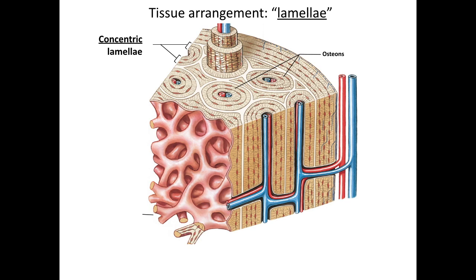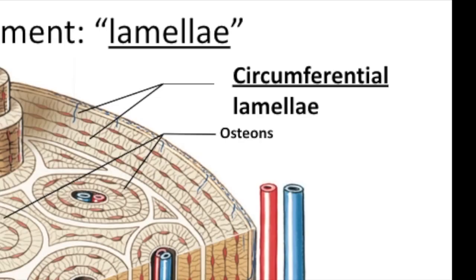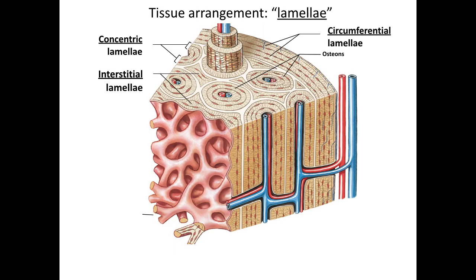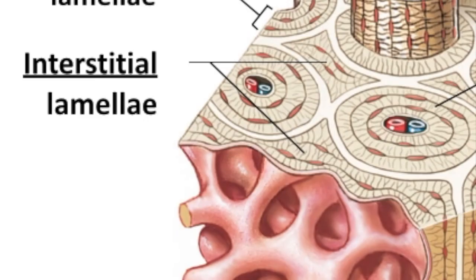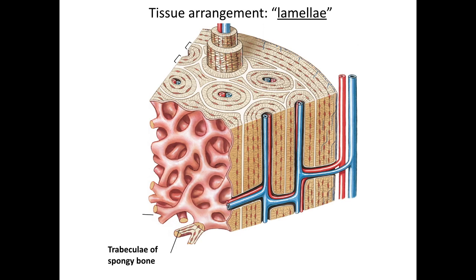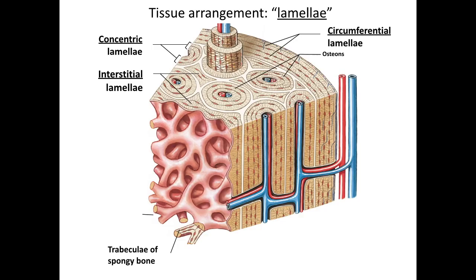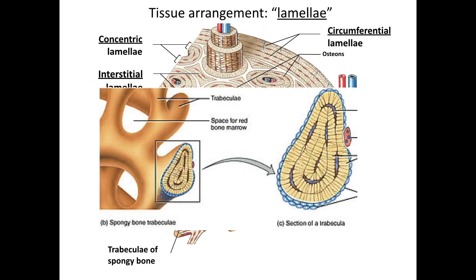Around the entire bone is a layer called the circumferential lamella. In between the concentric lamellae are smaller pieces called interstitial lamellae, which you may see in some tissue slices. When we get to spongy bone, we'll also talk about the trabeculae, which are composed of a similar type of structure.